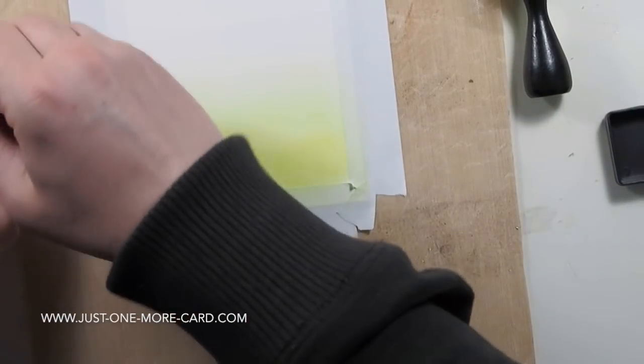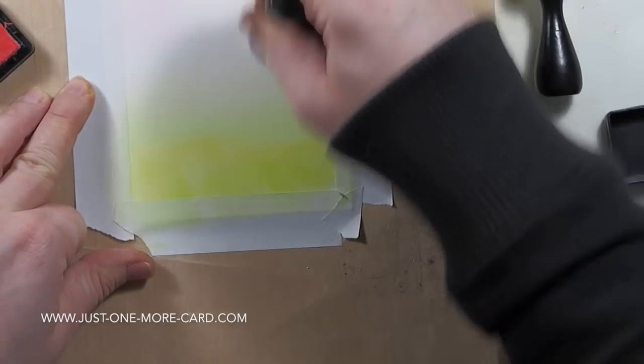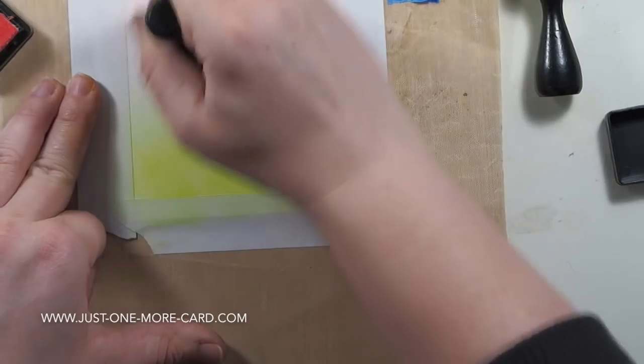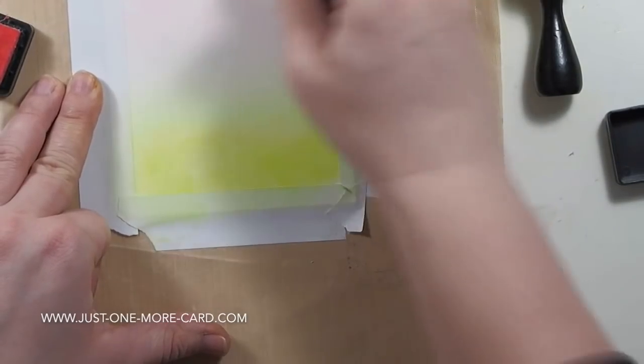I don't know, well you can kind of guess. Anyhow, so there's a little bit of card base that will not be covered by the panel, and I want that to remain white. I want the color to only be visible behind my die cut panel.